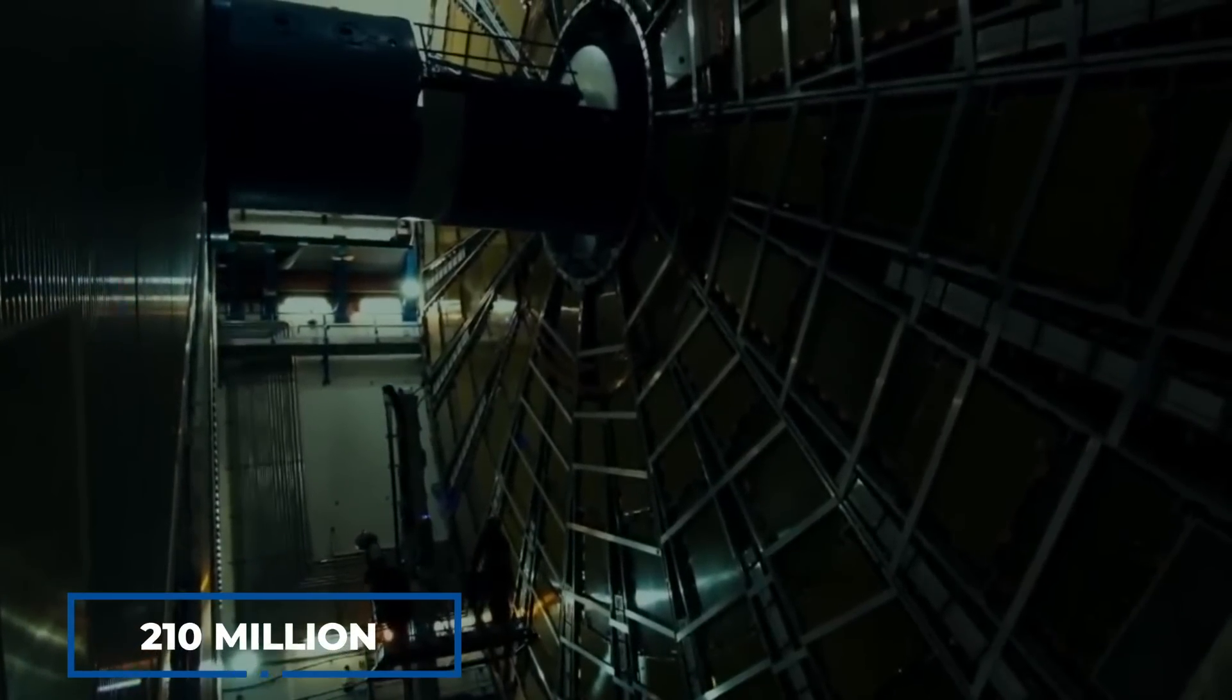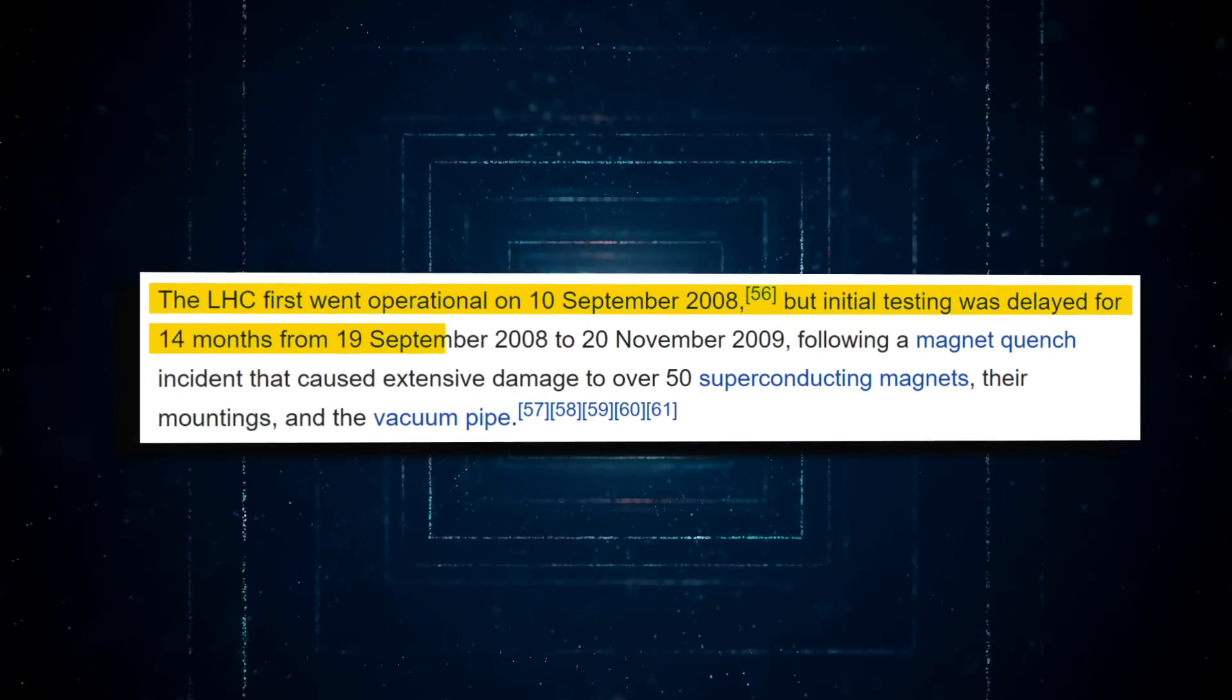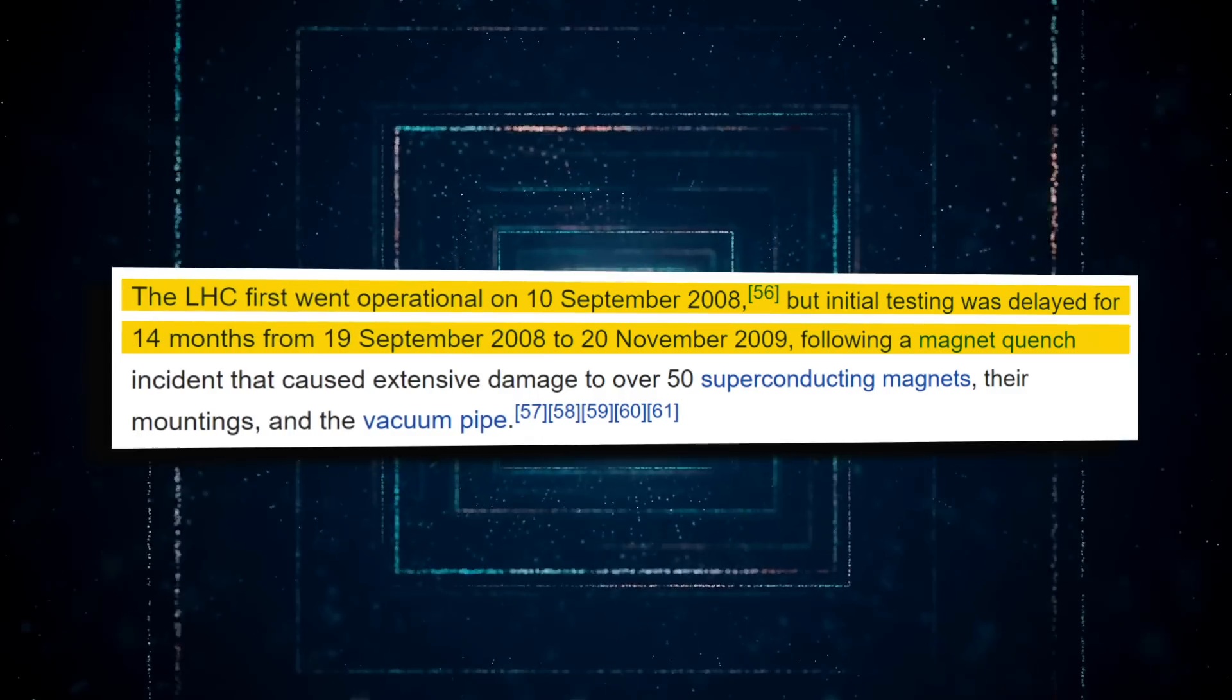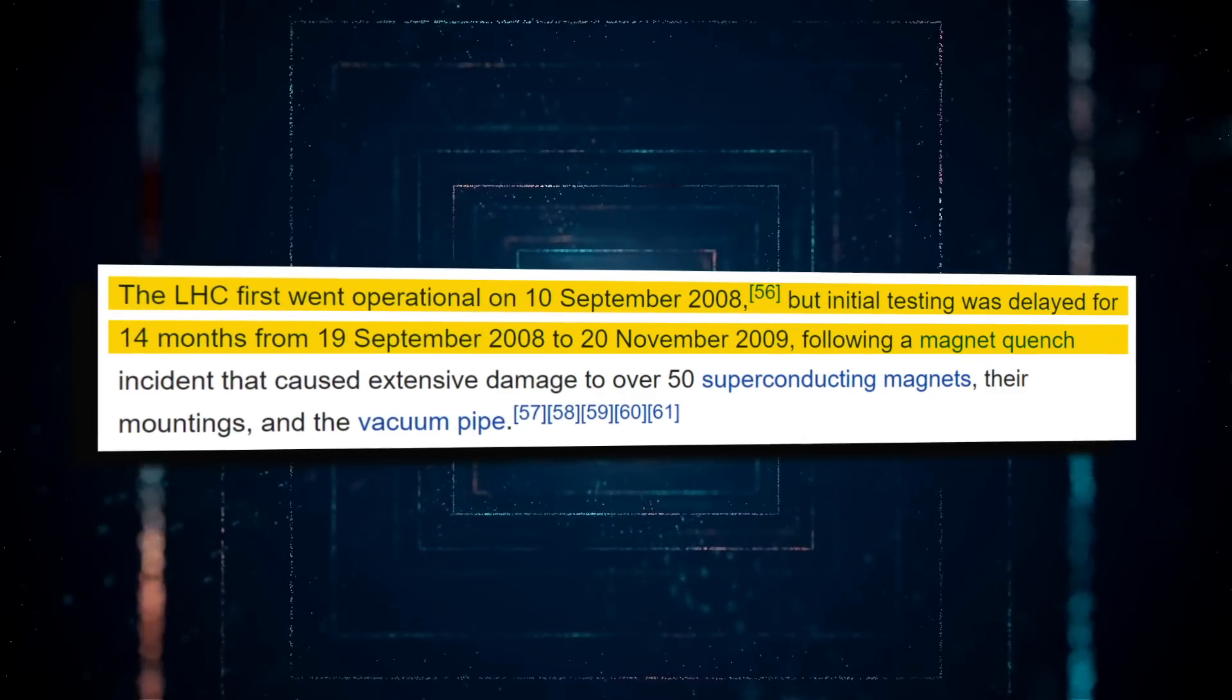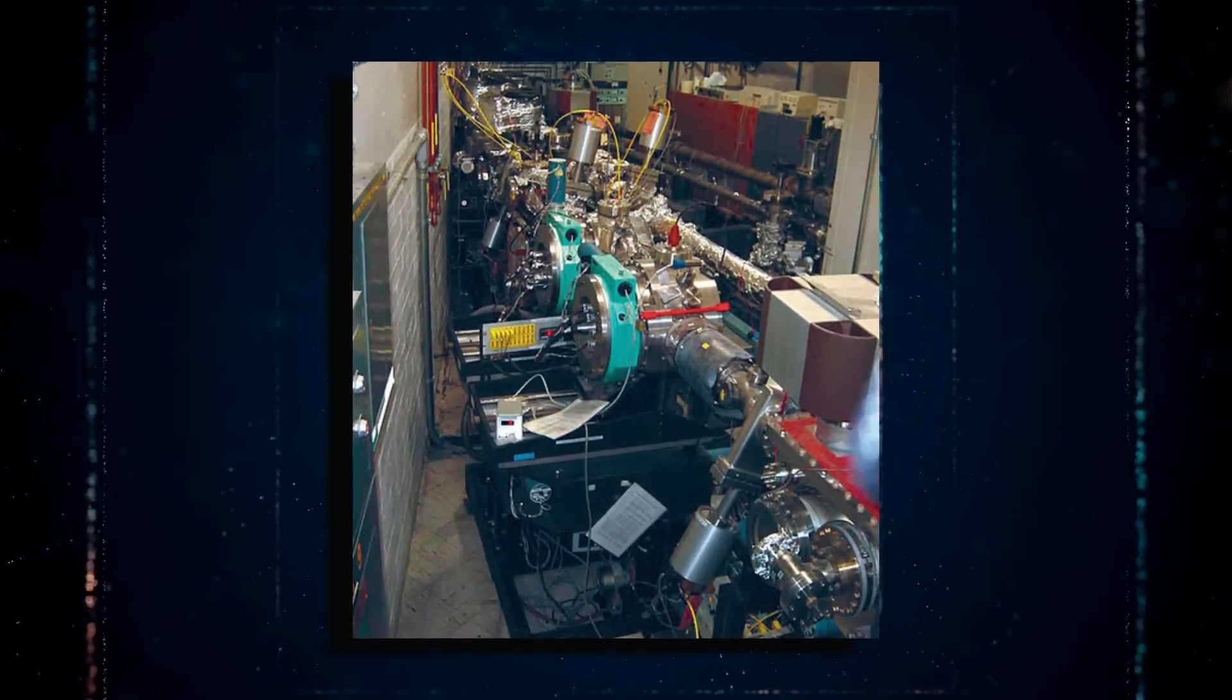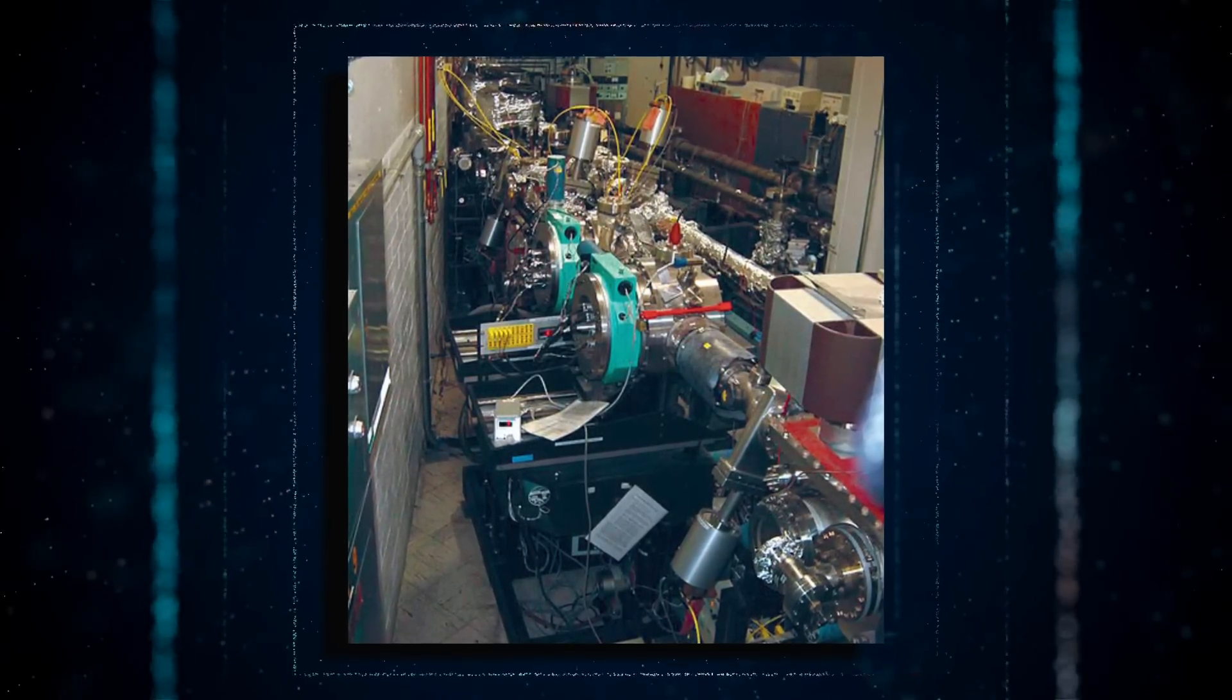The LHC's initial testing was delayed for 14 months after it became operational on September 10, 2008, due to a magnet quench incident that caused substantial damage to more than 50 superconducting magnets, their mountings, and the vacuum pipe.